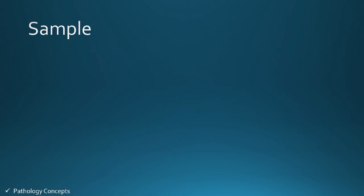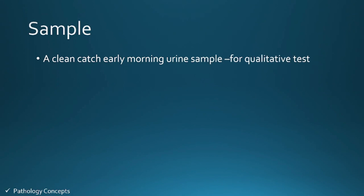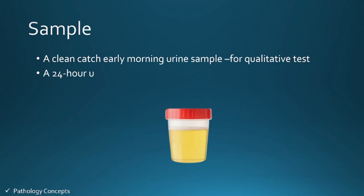The samples required to test Bence Jones protein are: first, a clean catch early morning urine sample, which is required for a qualitative test; and second, a 24-hour urine collection, which is required for a quantitative test if you want to measure the exact amount of free light chains in the urine.